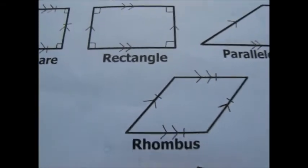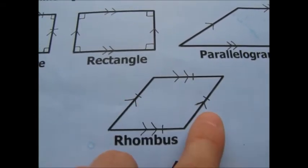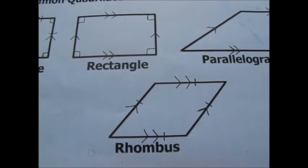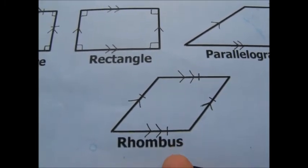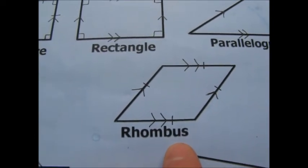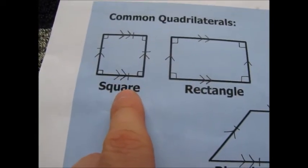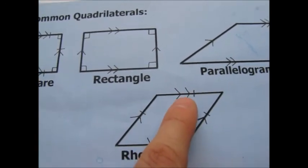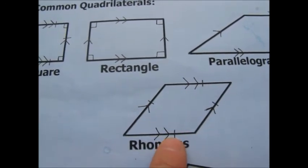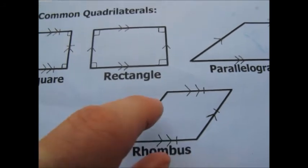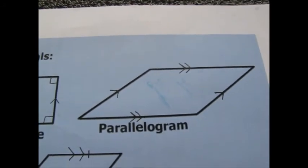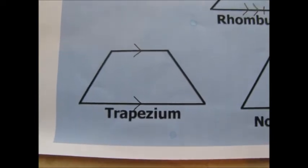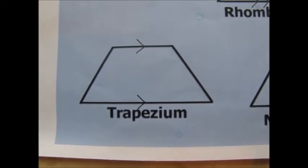Next is the rhombus, which also has two pairs of parallel sides, making it another parallelogram — but it's not like a rectangle or square. I remember it as a square that's been pushed over and is leaning. It must have all equal sides. If it doesn't have equal sides and is stretched out, then it's just a parallelogram. The rhombus is a special parallelogram with equal sides.